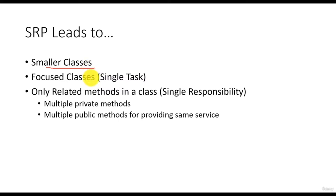You may say that in this case each class will have only one method. It is not exactly so. A class can still have multiple methods as long as they are related. One responsibility may also need to be served by multiple private methods. It may also require multiple public methods providing different kinds of interfaces for the same services.